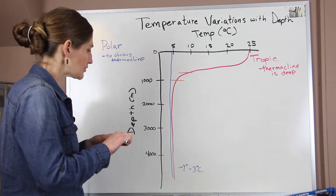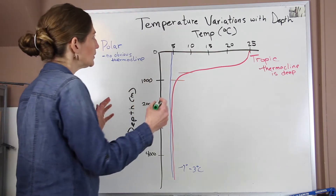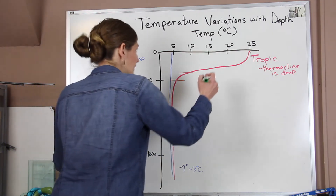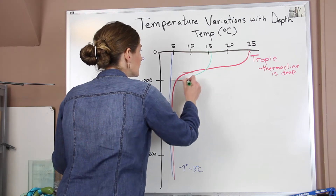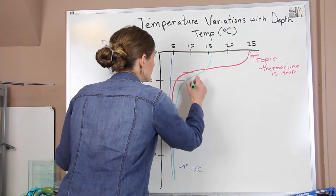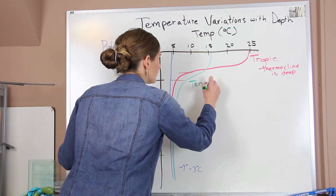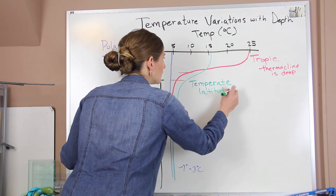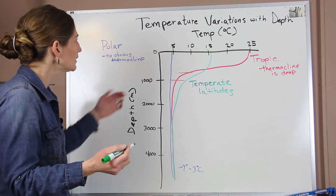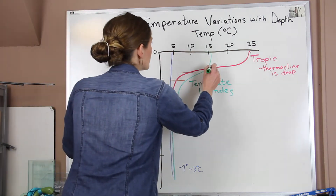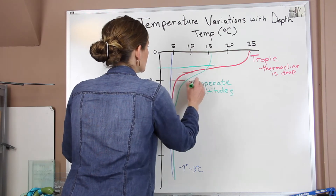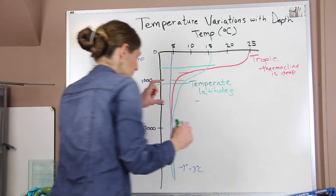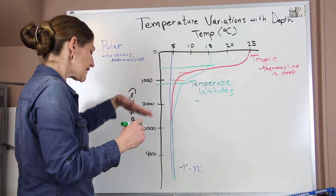Our temperate latitudes are a little bit different — they're kind of between the two, and they're a place where we actually do see some seasonal variation. We have warmer water at the surface, but our thermocline — the zone where we see this rapid change — it's much larger. The thermocline starts more shallow and it continues at a deeper depth.